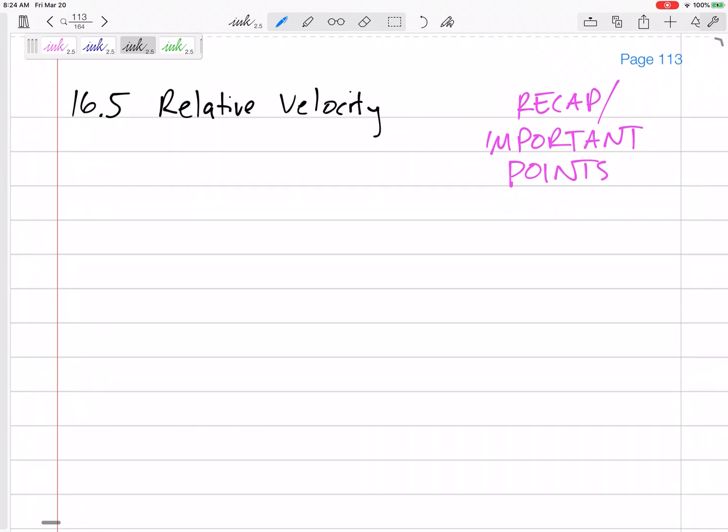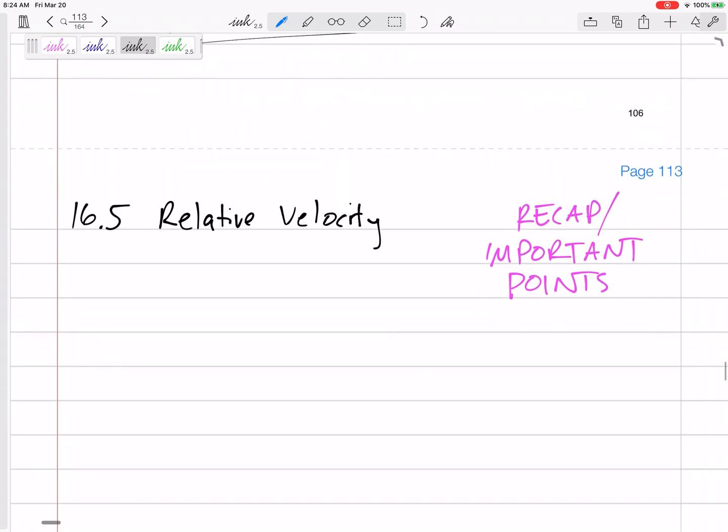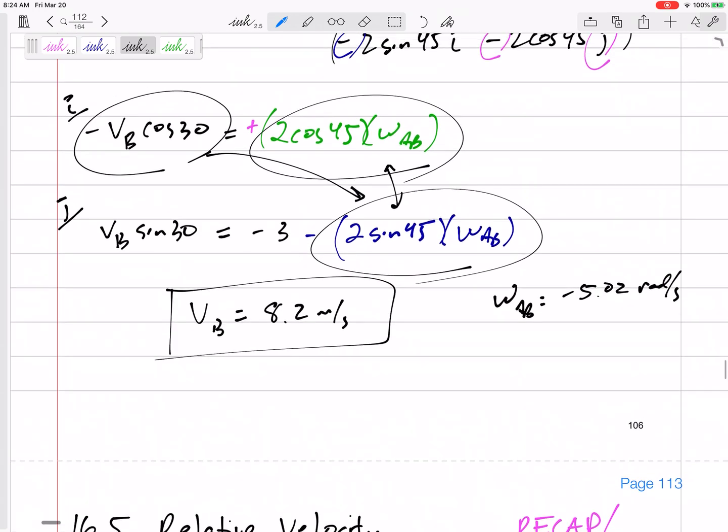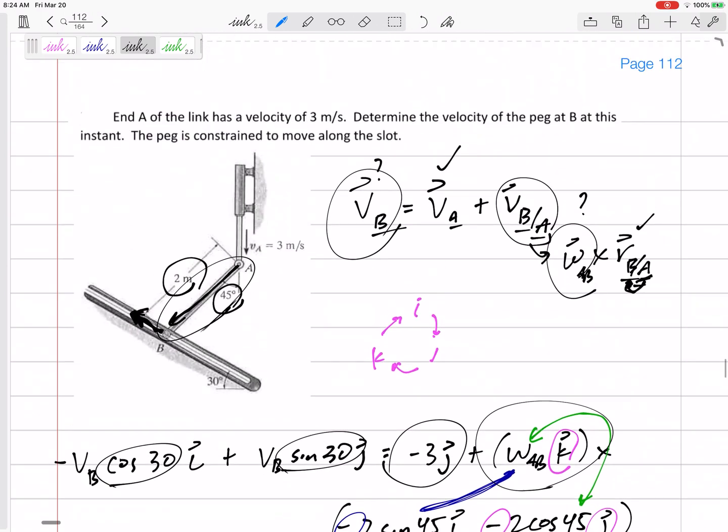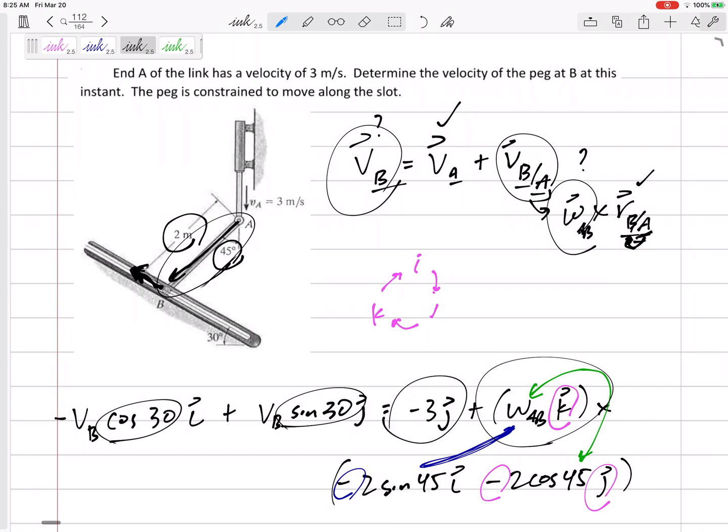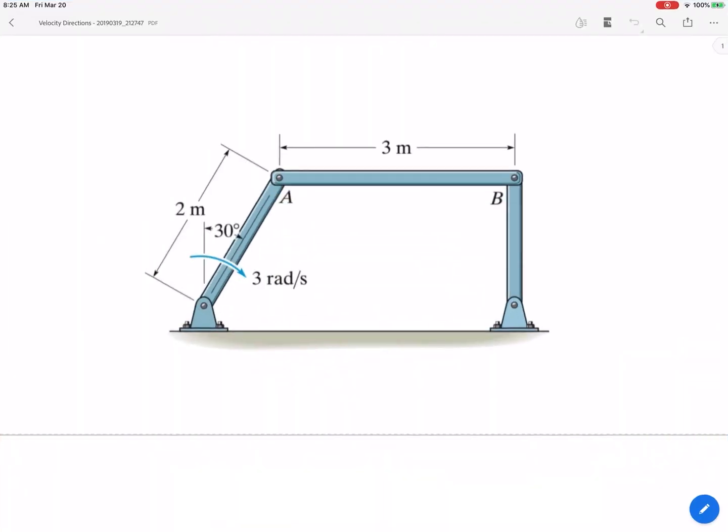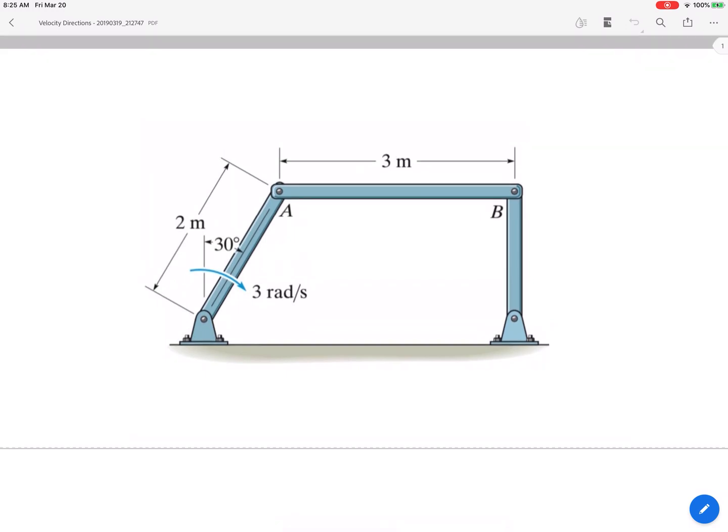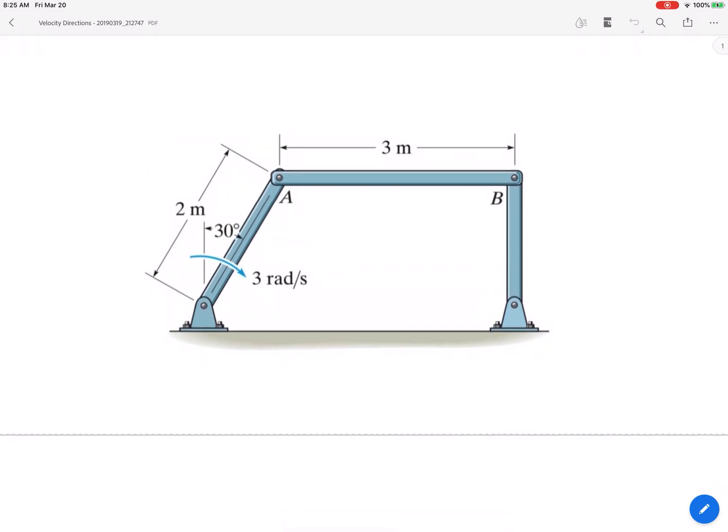Alright, so before we wrap up this section and assign the homework, I've got another file that y'all can practice with. If you look in Canvas, I'll post this file called velocity directions. For these problems, many times we're looking at the middle bar here, bar AB.